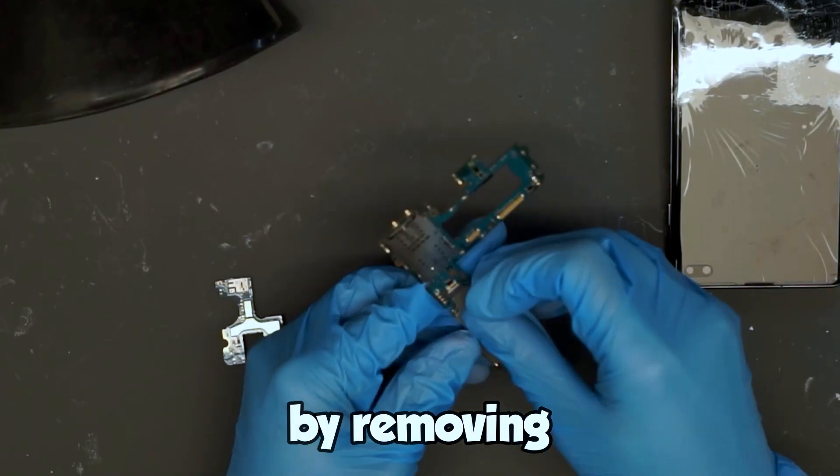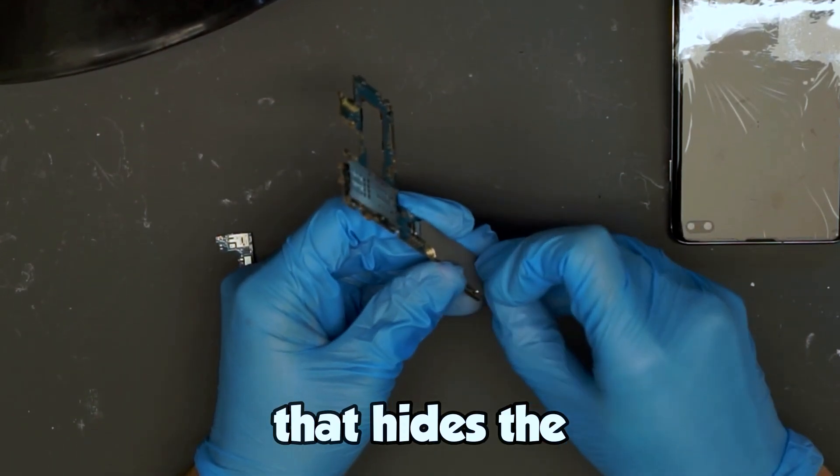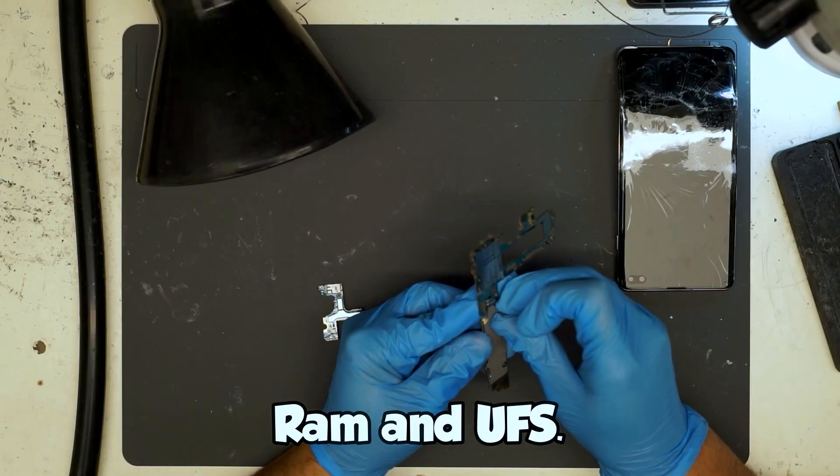Let's get started by removing this shield that hides the CPU, RAM, and UFS.